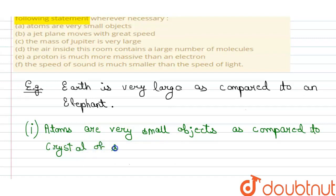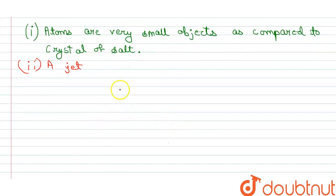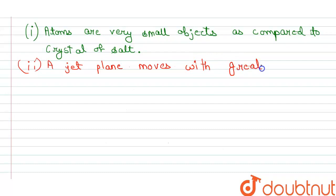The second statement is: a jet plane moves with great speed. So, a jet plane moves with great speed as compared to a train.